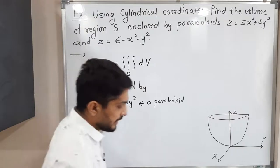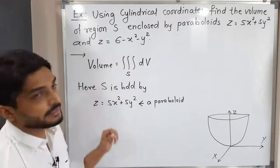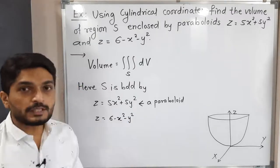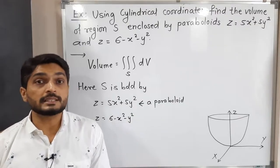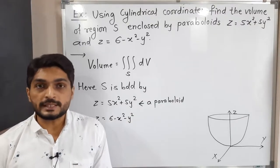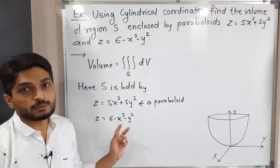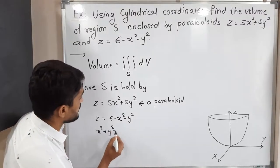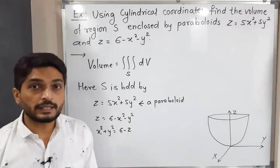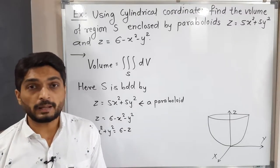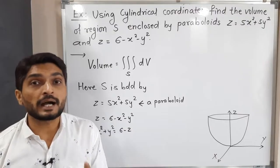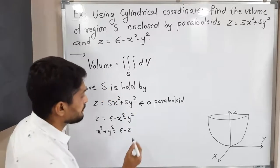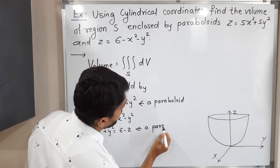Now let us discuss the second curve: z = 6 - x² - y². The power of z is one and the power of x and y is two, so it is again a paraboloid. Let me express it in standard form. Shifting x² and y² to the other side: x² + y² = 6 - z. The power of z is one, so this paraboloid is around the z-axis, but z has a minus sign, so this paraboloid will be in the downward direction.